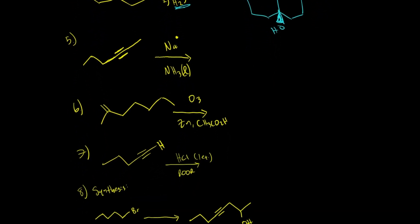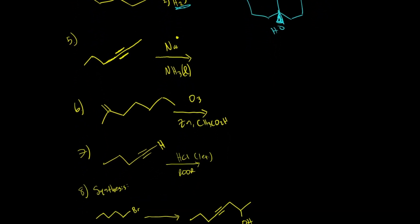Let's move on to number five. We have NA with a single radical in NH3 liquid. If we go through a little mechanism, we know we're going to be breaking off one of these pi bonds. It's going through these fishhook arrows. This NA is going to donate that single electron. So we have one, two, three, four, five, six carbons — and again, one, two, three, four, five, six carbons.